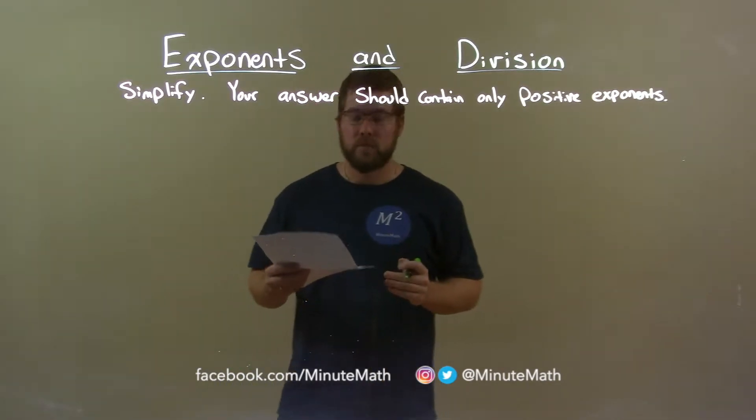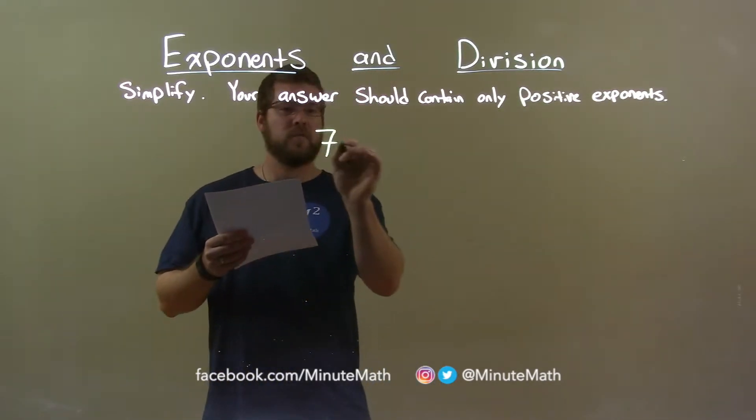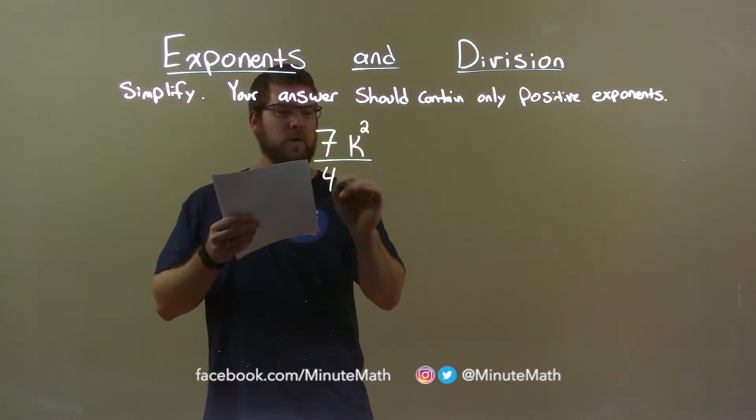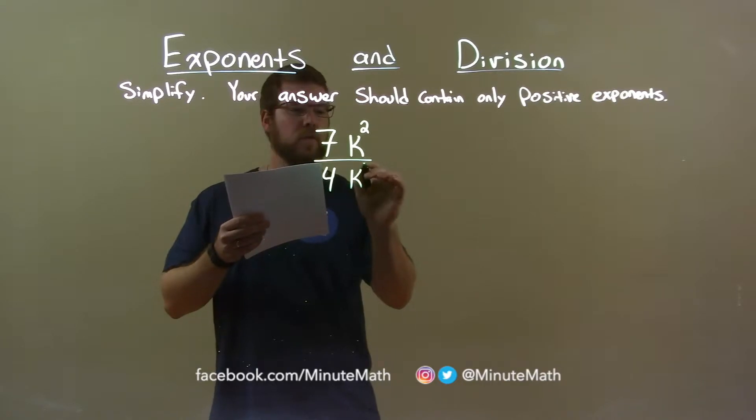So, if I was given this problem: 7k squared over 4k to the third power.